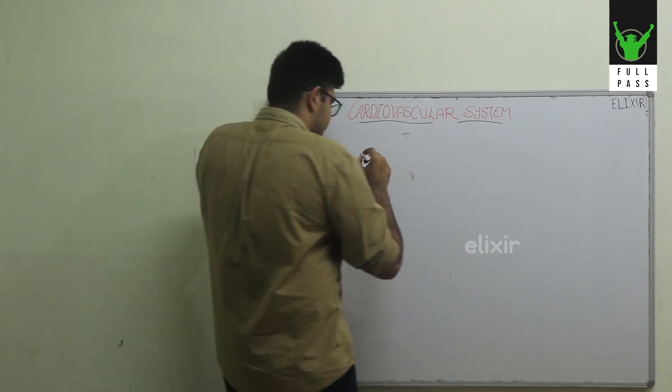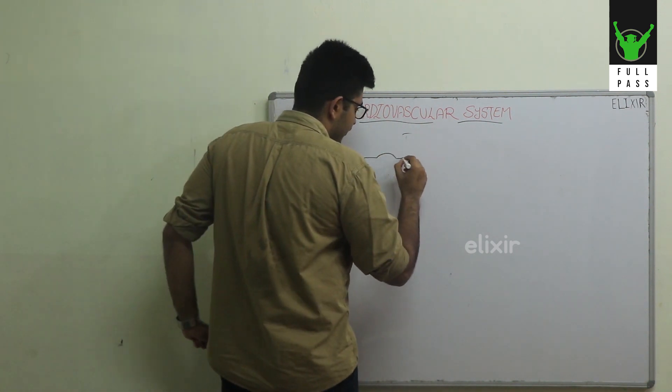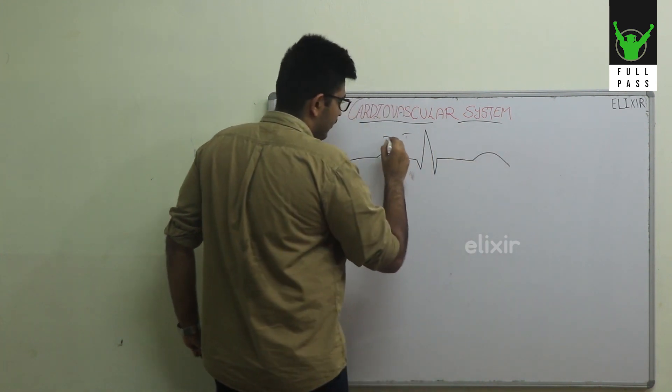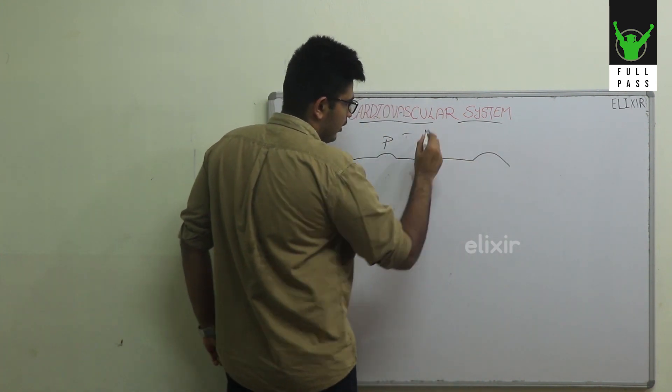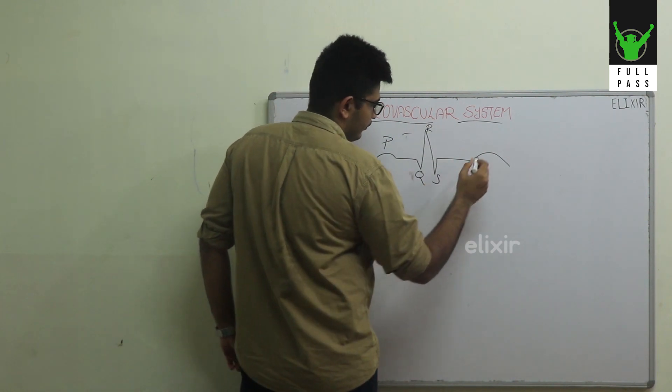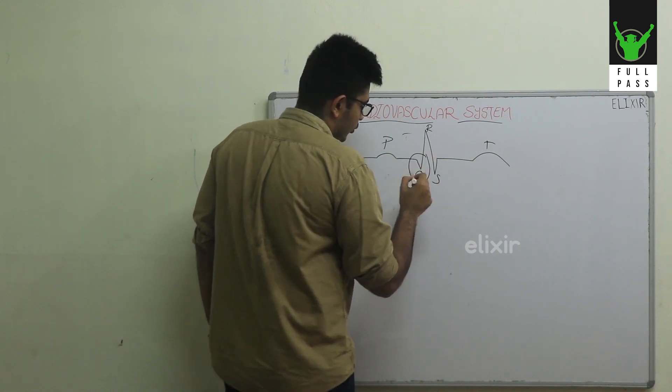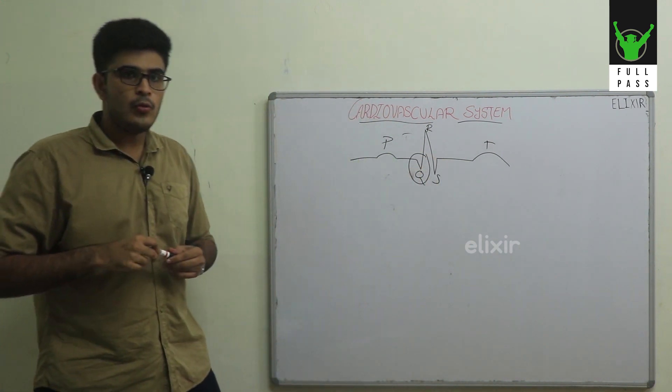Let's look at the ECG. This is your normal ECG. So this is the P wave, Q wave, R wave, S wave, and T wave. This is the QRS complex, and your topic here is this Q wave.